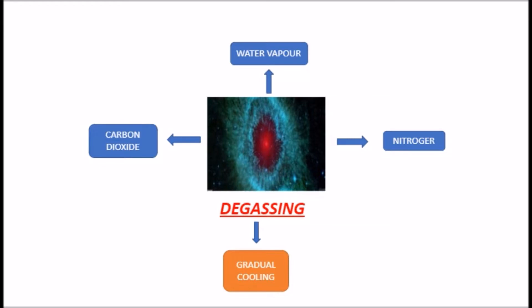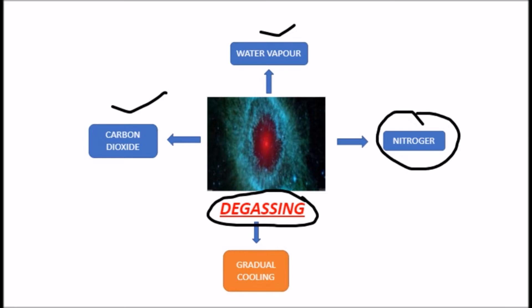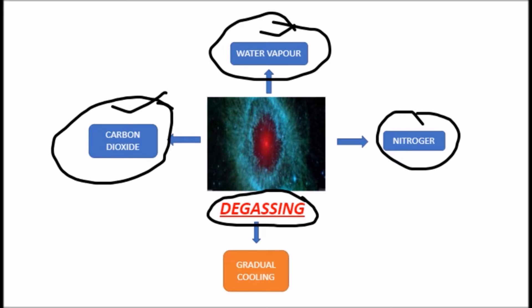There are a lot of gases in the water, because the gas is made of carbon dioxide, water vapor, and nitrogen. This gas is also known as the site of carbon dioxide and water vapor. This is the degassing of the nebula, and the degassing phase of the nebula is in the 8th grade.